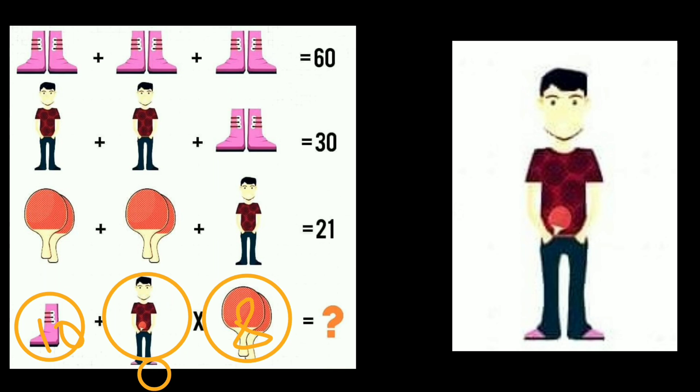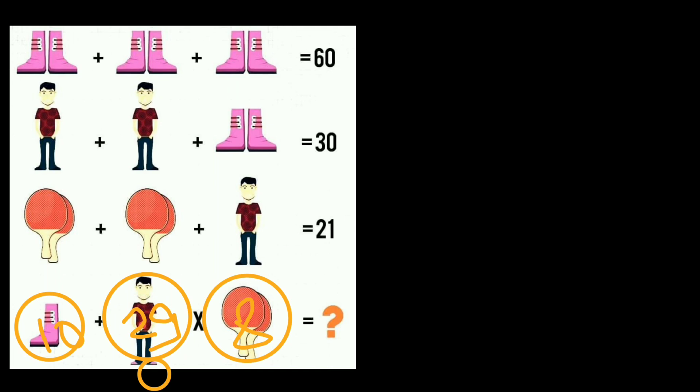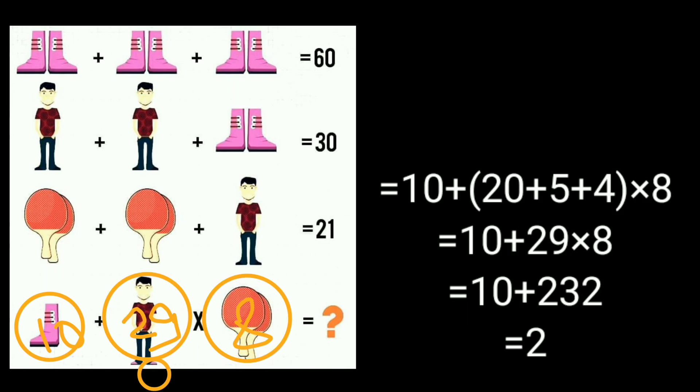And a pair of shoes is equal to 20. 5 plus 20 is 25. And the value of a pair of badminton is equal to 8. And he is carrying only one badminton. So the value of badminton is equal to 4. It means 20 plus 5 plus 4 equals 29. Now we have to multiply 29 into 8 equals 232. It means 232 plus 10 equals 242.